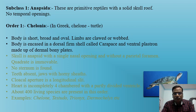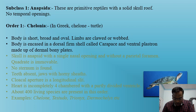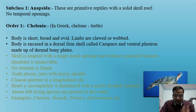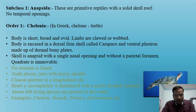A very characteristic feature of turtles and tortoises is the firm shell called the carapace (dorsal) and ventral plastron, made up of dermal bony plates, primarily for protection. When in danger, turtles withdraw their legs and heads into this bony structure. The skull is anapsid with a single nasal opening and without a parietal foramen.